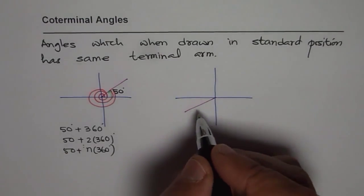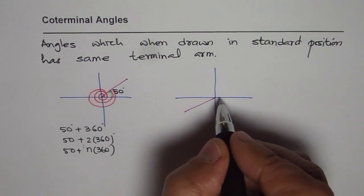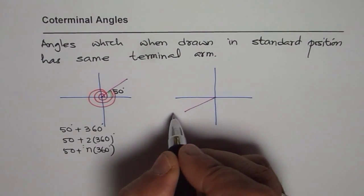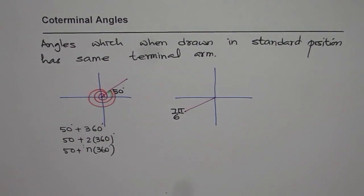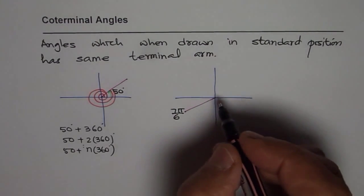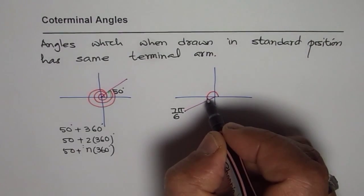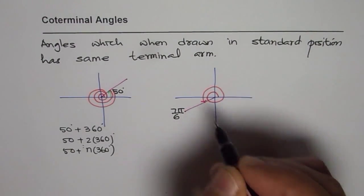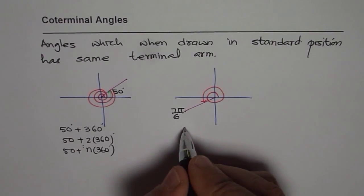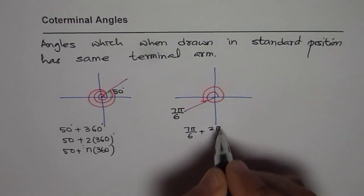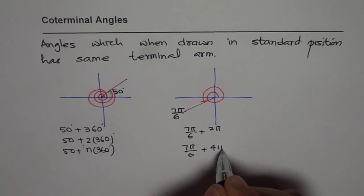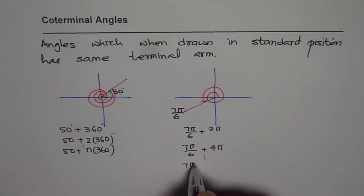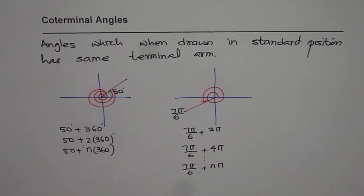Now let's take another example, this time in radians. Let's say the angle is 7π/6. The co-terminal angles for this could be one full circle plus this angle: 7π/6 plus 2π. Or after two circles: 7π/6 plus 4π. Or in general, 7π/6 plus nπ where n is any integer. So these are all co-terminal angles.